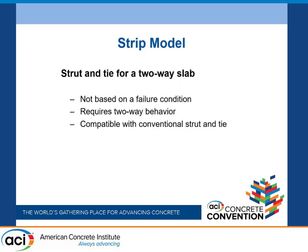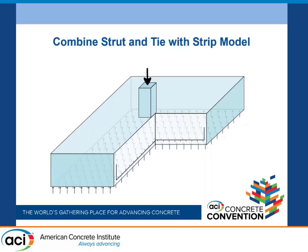So it's not based on a failure condition. This is sort of a strut-and-tie for two-way slabs. The strip model only works for two-way slabs because it needs different kinds of behavior — deep beam behavior in one direction and comparatively slender beam behavior perpendicular. It needs flexural behavior in two different directions that are different.